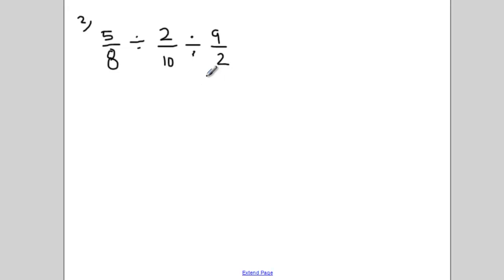So let's try this question. Here I have 5 eighths divided by 2 tenths divided by 9 halves. When we approach this question, and really any math question, you always want to try and read it from left to right, especially when we're talking about BEDMAS. From left to right, BEDMAS tells me to solve the first division first.